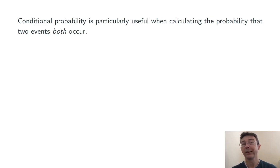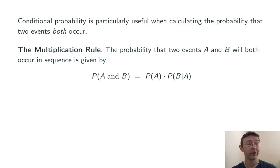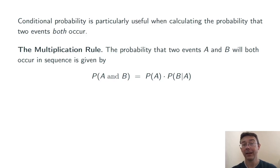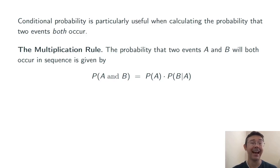Conditional probability is particularly useful when we want to calculate the probability that two events, A and B, both occur. The tool here is called the multiplication rule. The probability of A and B is the probability of A times the probability of B given A. Roughly, we think of it as the probability that the first event occurs times the probability that the second event occurs, assuming the first one has already happened.